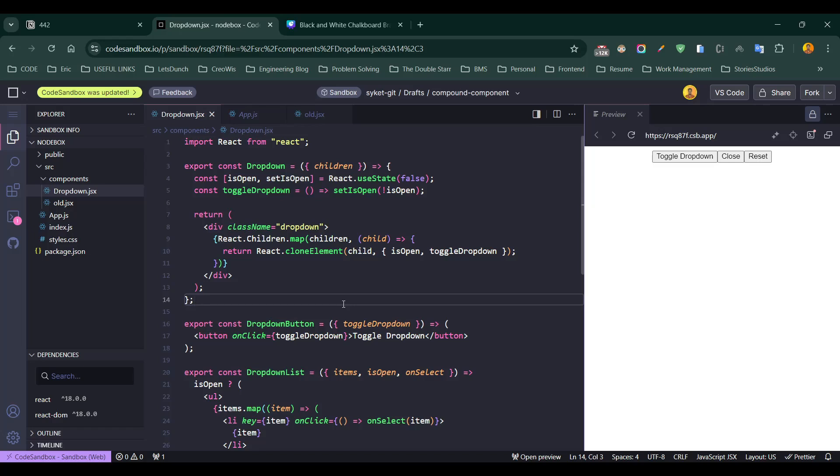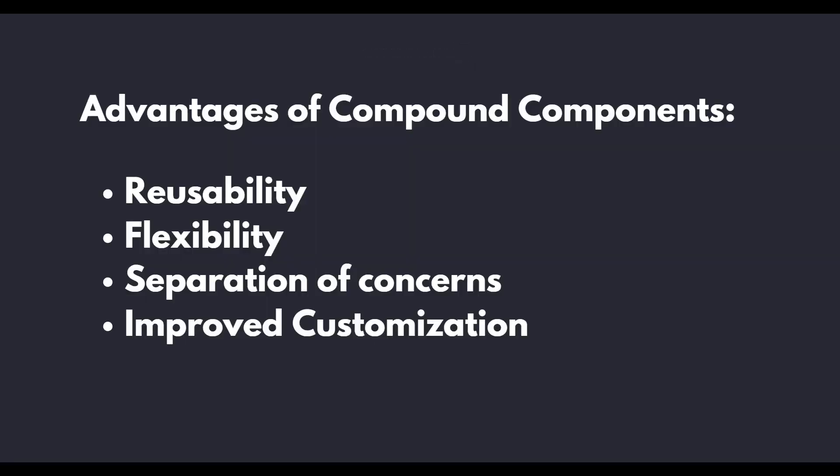Let's understand the advantages of using this compound component design pattern. First, reusability — each child component can be reused in different places, making your code more modular. Second, flexibility — you can add or remove child components without changing the core logic of the parent. Third, separation of concerns — each part of the component does its own job, keeping logic clean and isolated. Fourth, improved customization — developers can decide how to structure the compound components without needing to modify internal logic.